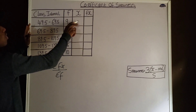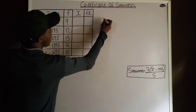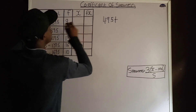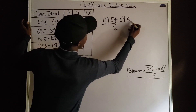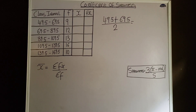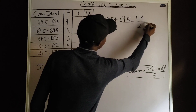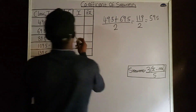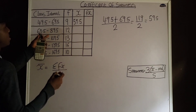To get the midpoint of the first class interval, I calculate 49.5 plus 69.5, all over two. That is 119 divided by two, which gives 59.5. So the midpoint x for the first class interval is 59.5.